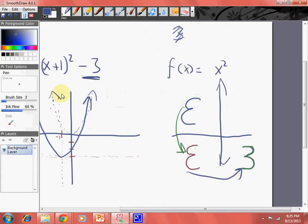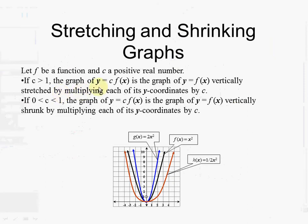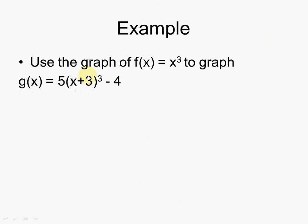So let's do a few examples. Over here we have a parent function that looks like x cubed, but we have a function that will go through a vertical shift, horizontal shift, and it will stretch vertically by a factor of 5 — meaning it's going to go upwards faster. When it used to just go upwards by 1, now it goes upwards 5. When it used to go upwards 9, now it goes upwards 45.